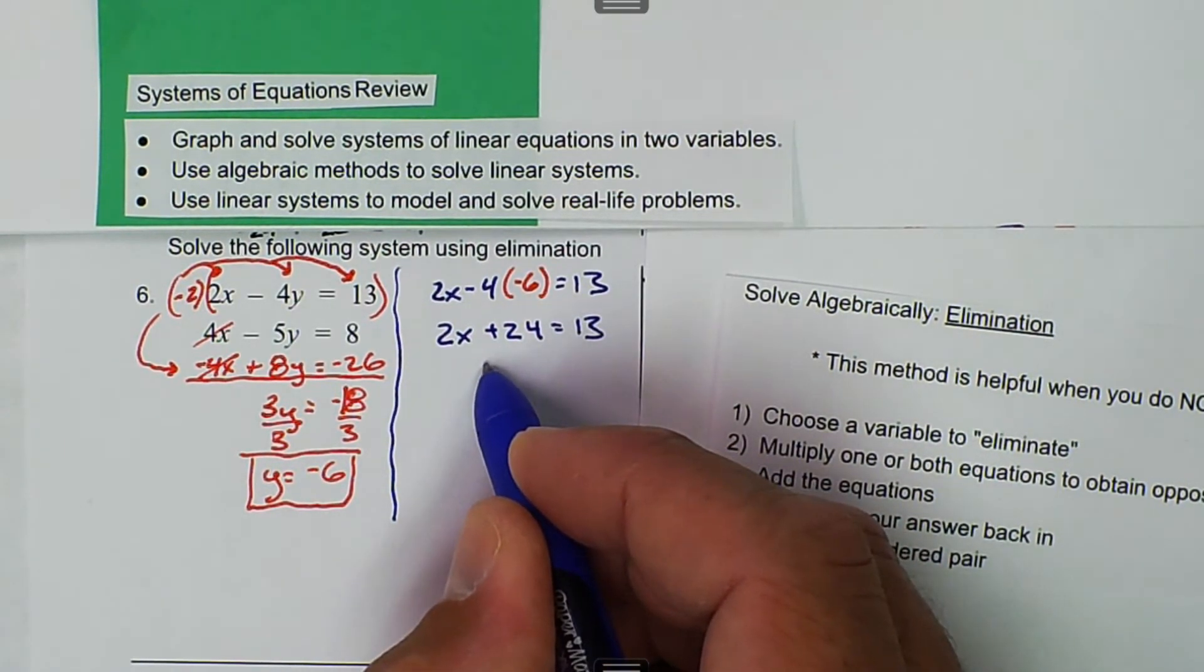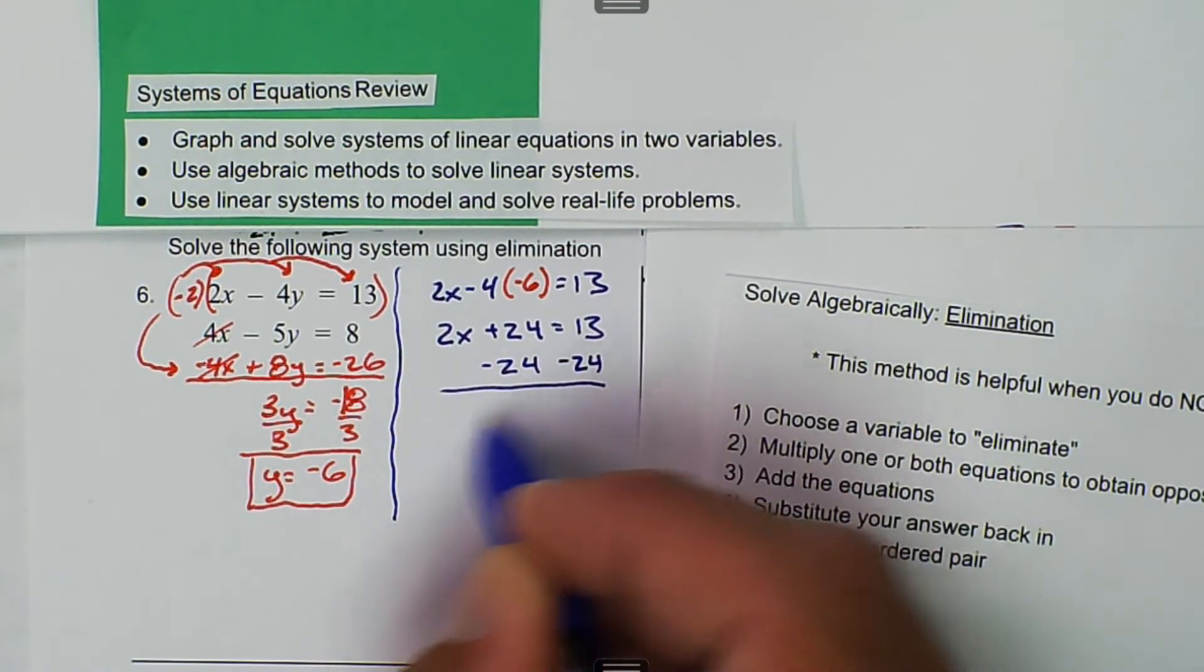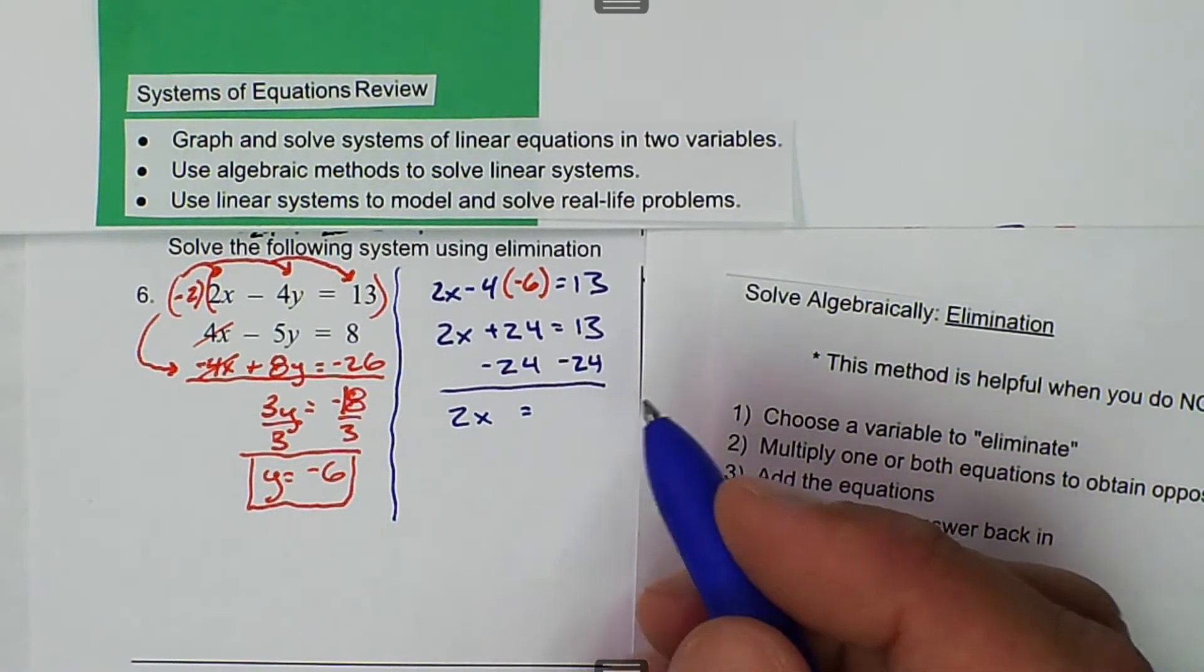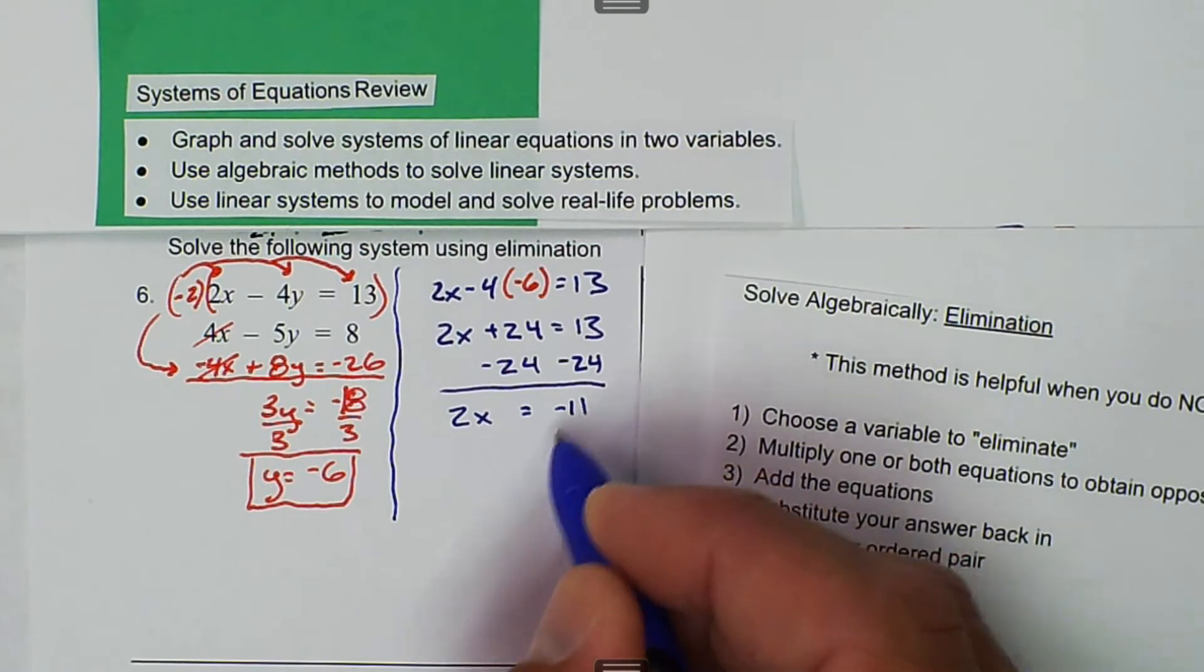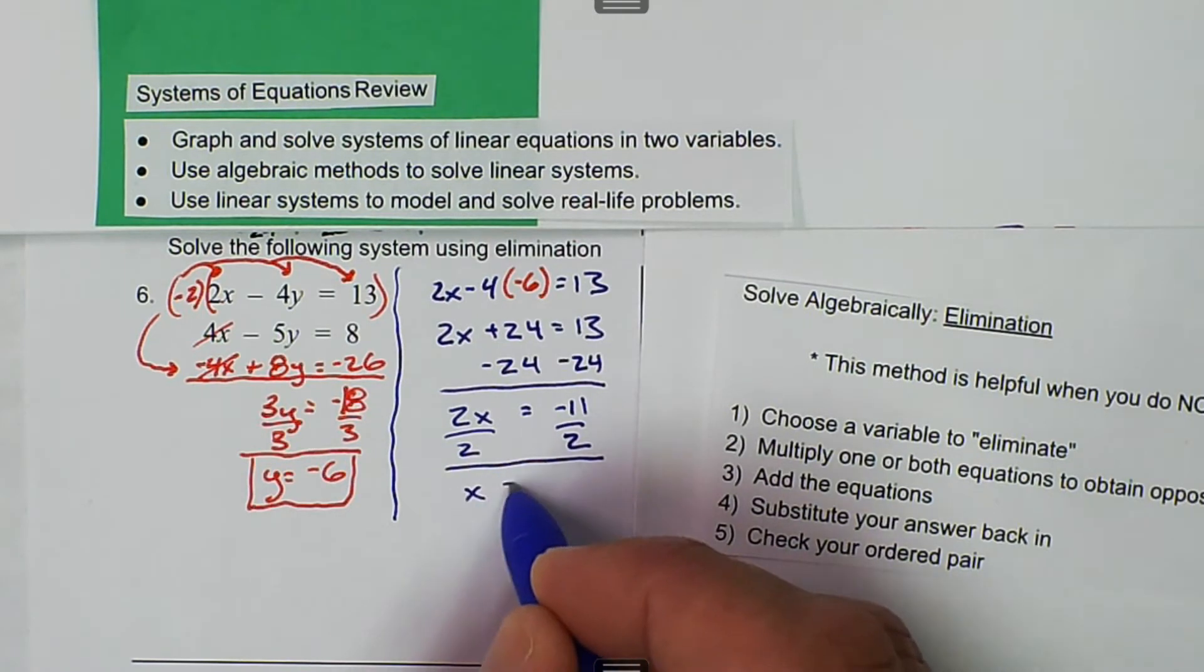Then we subtract 24 from both sides, and we get 2x is equal to negative 11. Divide by 2, and we get x is equal to negative 11 over 2.